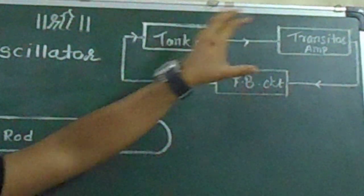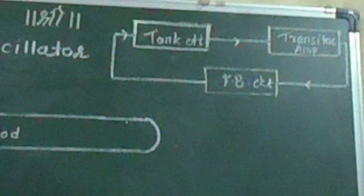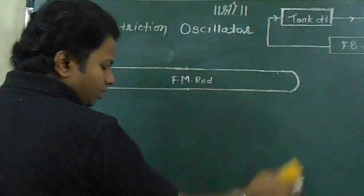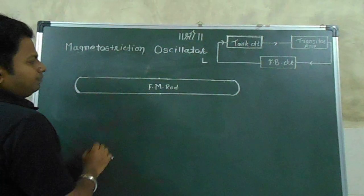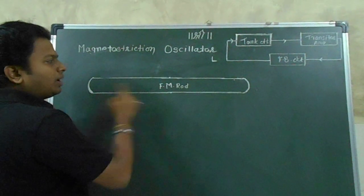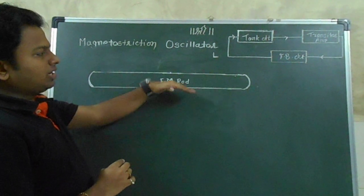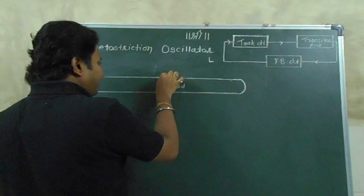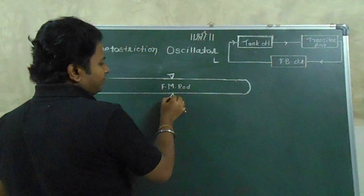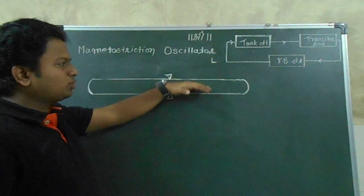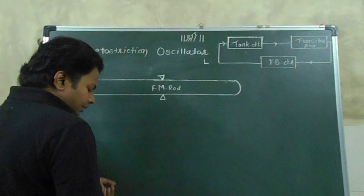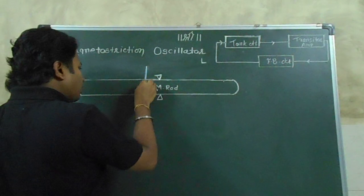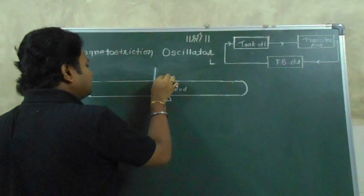Now let us see how these three blocks are implemented in the Magnetostriction Oscillator. The first requirement is a ferromagnetic rod of suitable length L. The rod can vibrate along the X as well as Y axis, but we have to avoid vertical vibration. Hence, we clamp the rod at the center. This clamping avoids vertical vibration, so now the rod is restricted to vibrate only along the X-axis. A coil is wound exactly at the center of the rod.